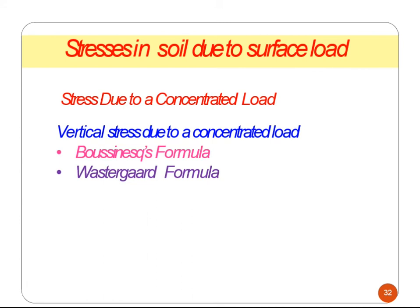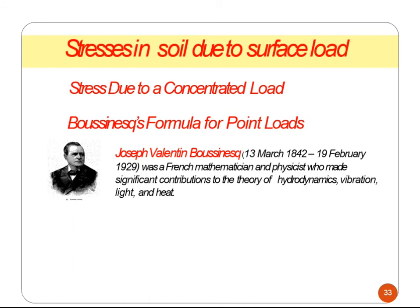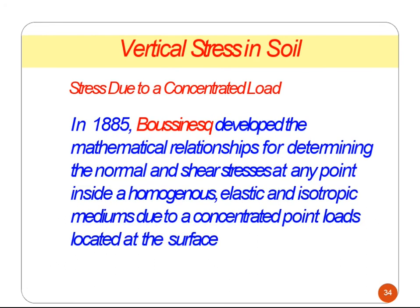There are two formulae to find vertical stress distribution. The first formula is the Boussinesq formula and the second is the Westergaard formula, both based on point load for finding stress. Boussinesq was a French mathematician and physicist who made a significant contribution to the theory of hydrodynamics, vibration, light, and heat. His formula was developed in 1885. Boussinesq developed a mathematical relationship to determine the normal stress at any point inside a homogeneous, elastic, and isotropic medium due to a concentrated point load located at the surface.